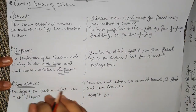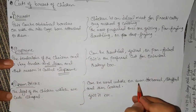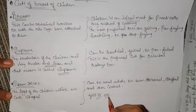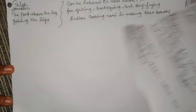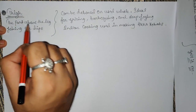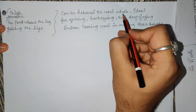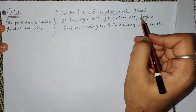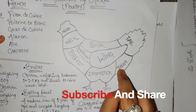The drumstick is the leg of the chicken. It can be used whole or deboned, stuffed, and then cooked, or just grilled. The thigh is the part above the leg joining the hips — it can be deboned or used whole, and is ideal for grilling, barbecue, deep frying, and Indian-style preparations like tikka and kebab.